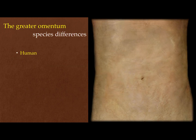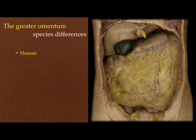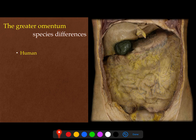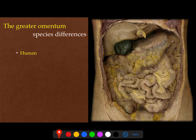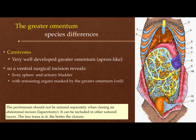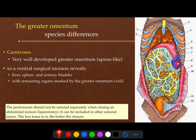Here is the greater omentum also shown in the human. Here is the abdomen — when we remove the skin, we see no intestine, just the liver and part of the stomach, but this apron of greater omentum covers the intestine. Under the greater omentum you can find the small and large intestine. The same in the dog: the liver, stomach, spleen, greater omentum, and part of the urinary bladder are visible. The greater omentum is well developed in the dog.